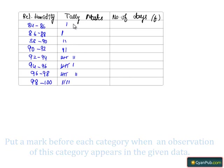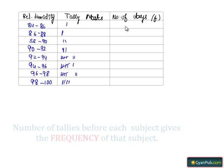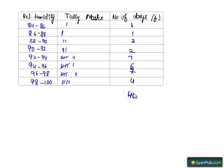Hence, if we write it as frequencies, we get 1, 1, 2, 2, 7, 6, 7, and 4. Adding all these frequencies, we get a total of 40.